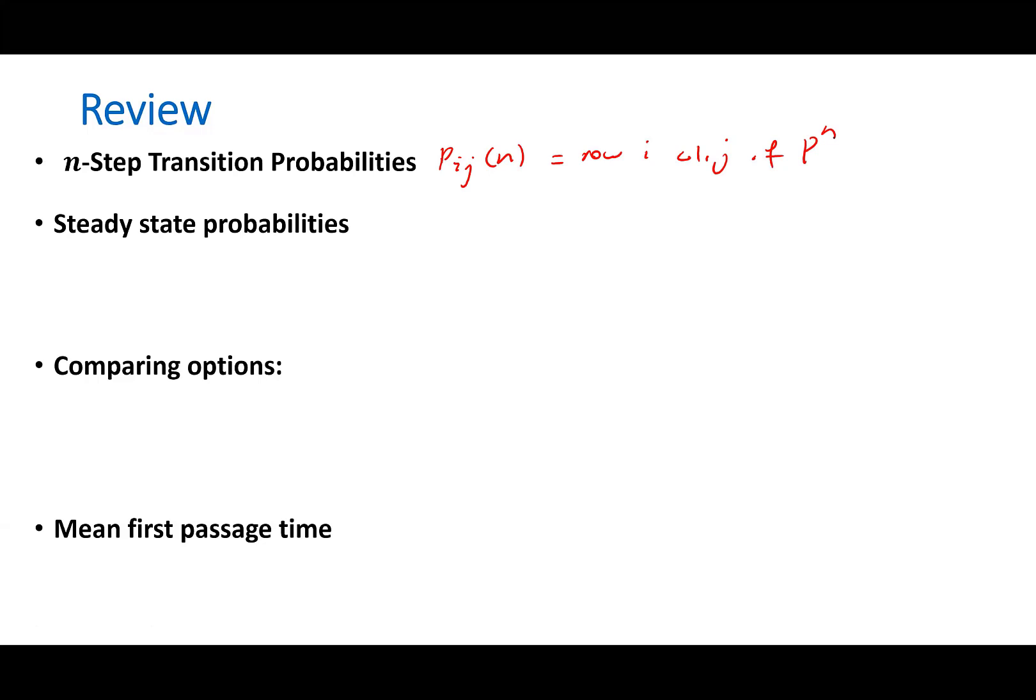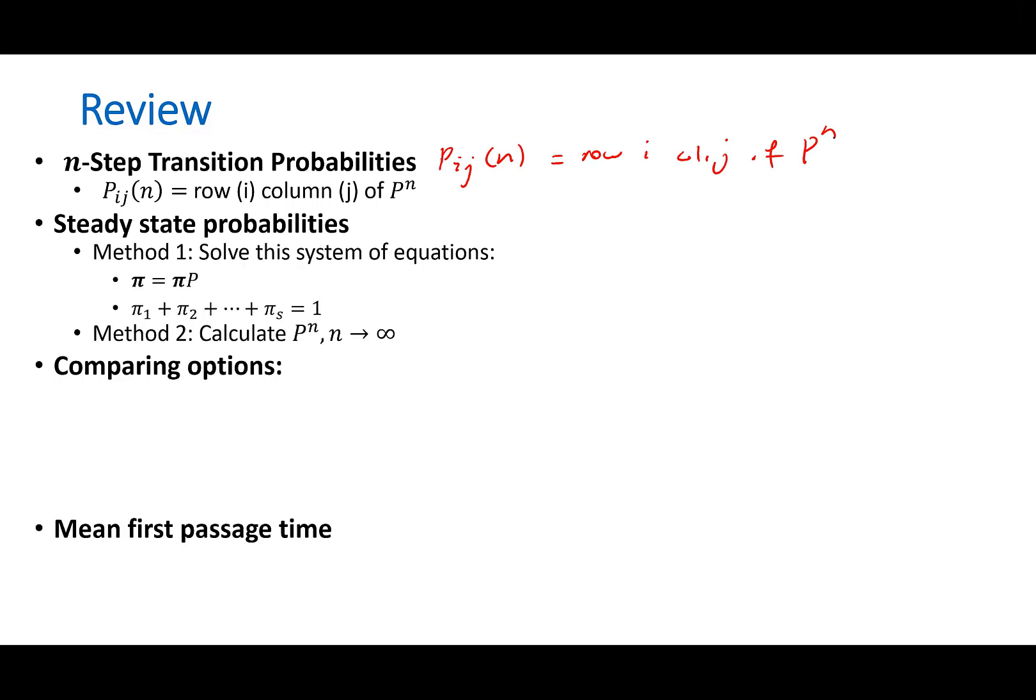And then we talked about steady state probabilities. There, we would first make sure that this is an ergodic chain. Then we would form this system of equations. So these are a bunch of equations itself here, plus this last equation, it will be a system of equations. And from there, we find the steady state probabilities, which means the fraction of time that a system is in a certain state after it becomes stable or settles down, or the probability of being in a certain state many, many steps from now.